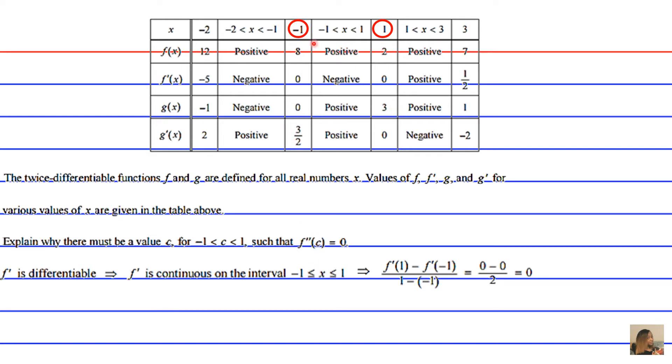The average value of the slope between 1 and negative 1 is going to be 0. Since that's the case, the Mean Value Theorem guarantees that there's at least one value c between 1 and negative 1. We might not know which one. There might be more than one, where the second derivative, or the average value of the slope, is equivalent to 0.